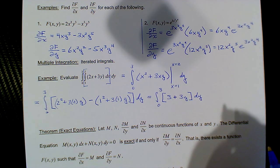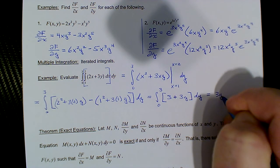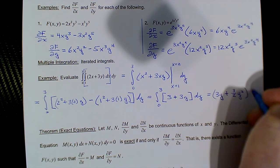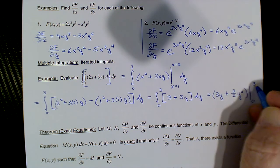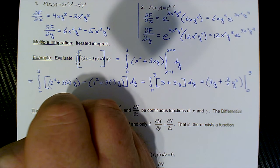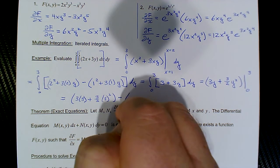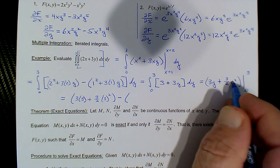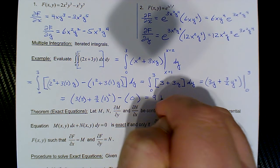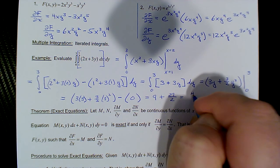Now we can integrate that as normal, just integrating with respect to y. The integral of 3 is 3y, and the integral of 3y is 3y²/2, or (3/2)y², evaluated from 0 to 3. By the fundamental theorem of calculus, the upper limit y = 3 goes in: 3·3 + (3/2)·3². Plugging in y = 0 gives zero since y is a factor of each term. So we get 9 + 27/2, which is 18/2 + 27/2 = 45/2.